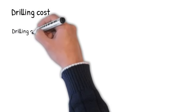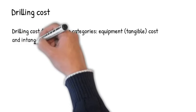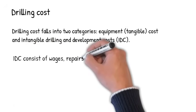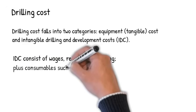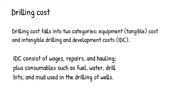The drilling cost falls into two categories. First, the equipment, which is tangible, and then the intangible drilling and development cost, also known as IDC, which consists of wages, repairs, and hauling, plus consumables such as fuel, water, drill bits, and mud used in the drilling of wells.